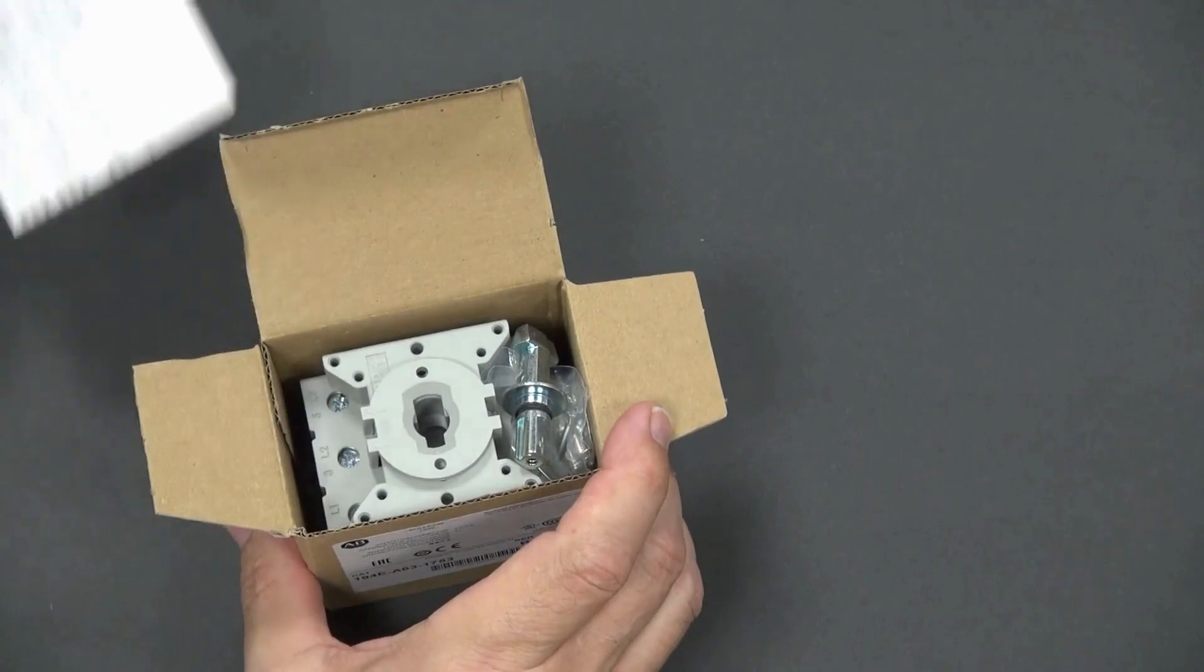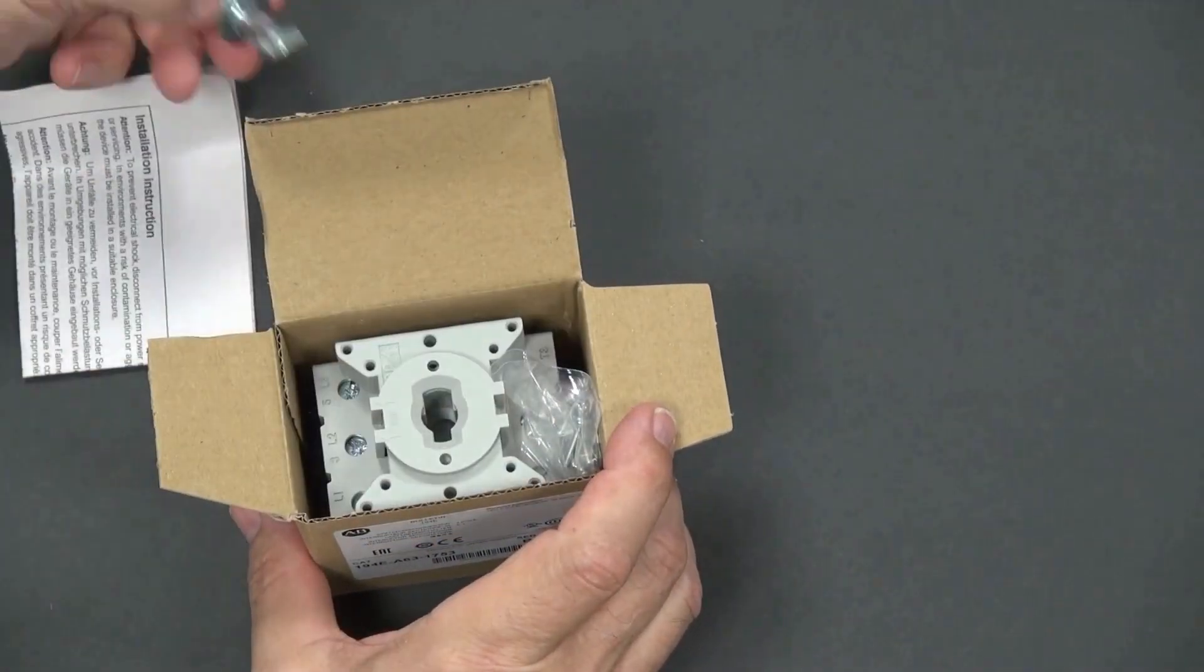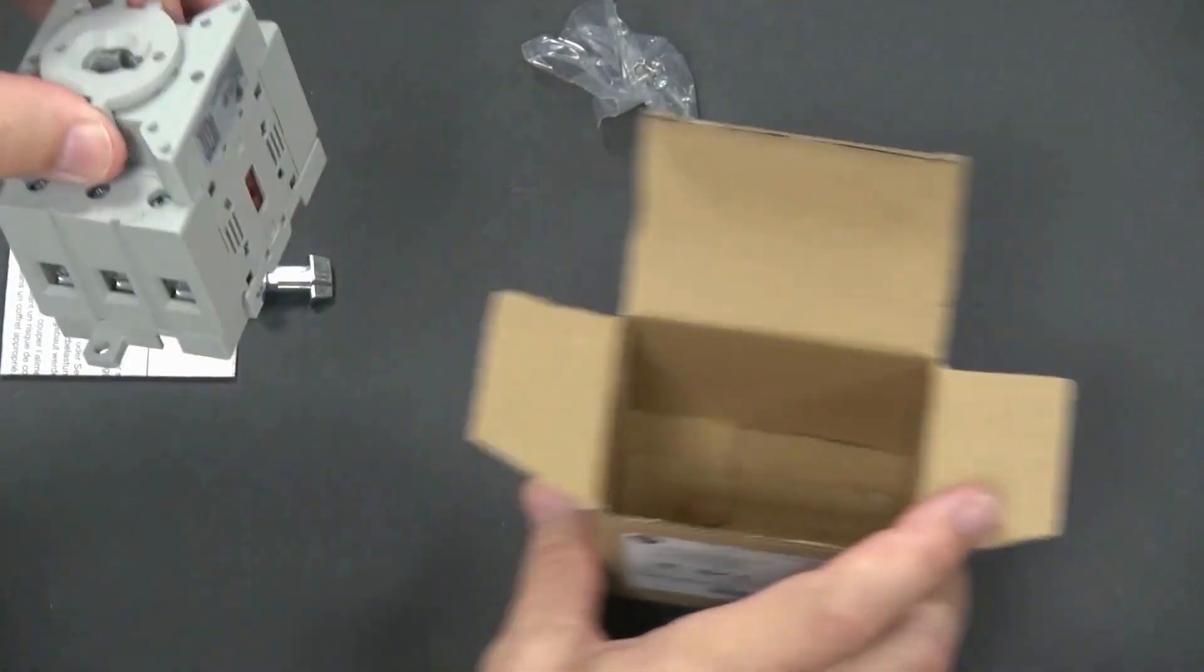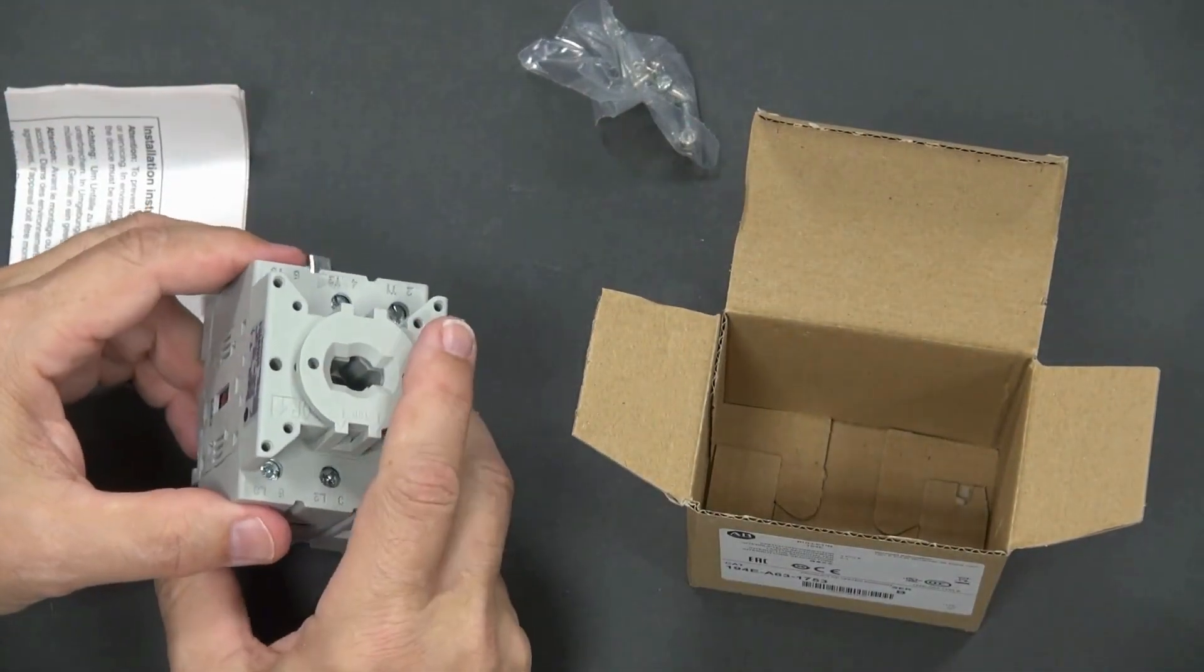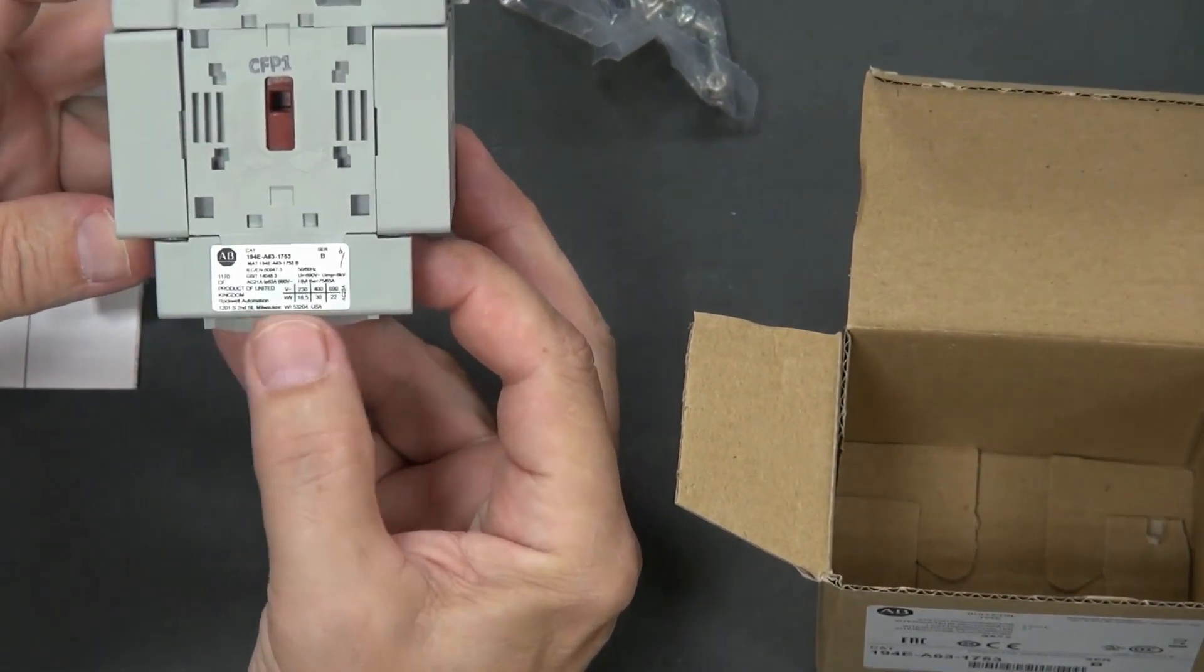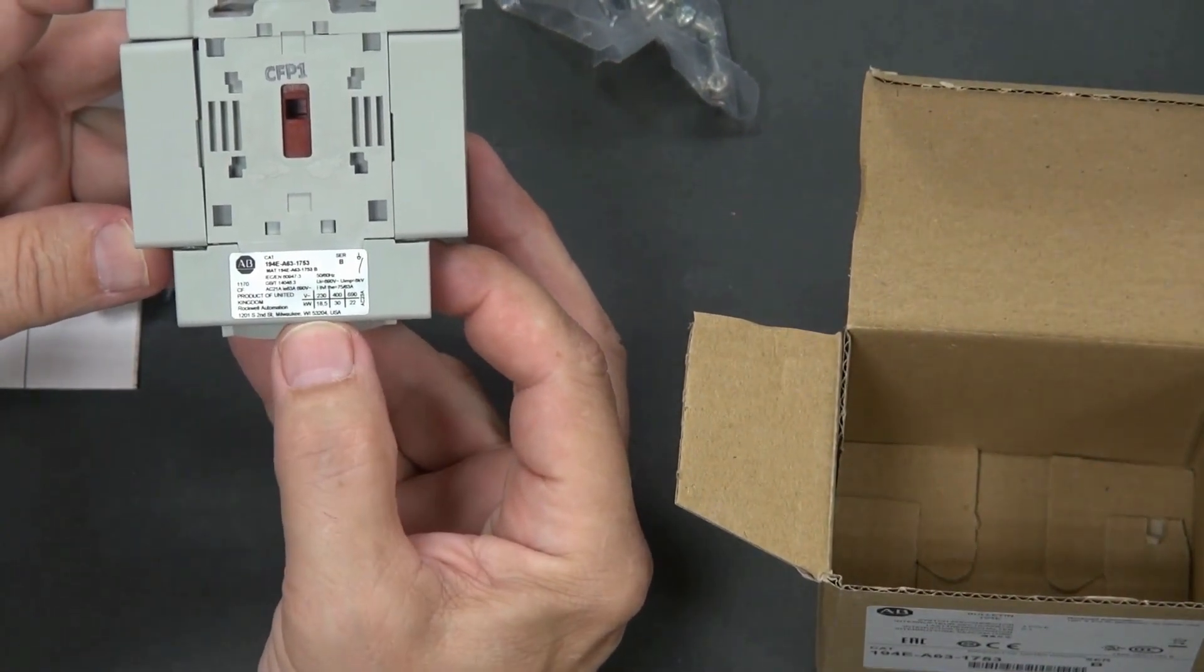Opening the carton, you see the instruction sheet, the operating shaft, and the mounting hardware. Let's take a closer look at the switch itself. Here we see the IEC ratings for the switch, and you'll also see the catalog number for the switch.